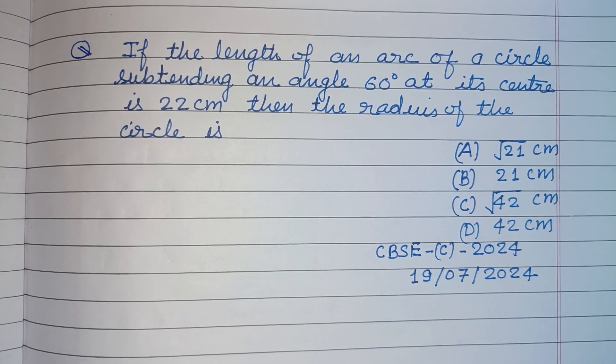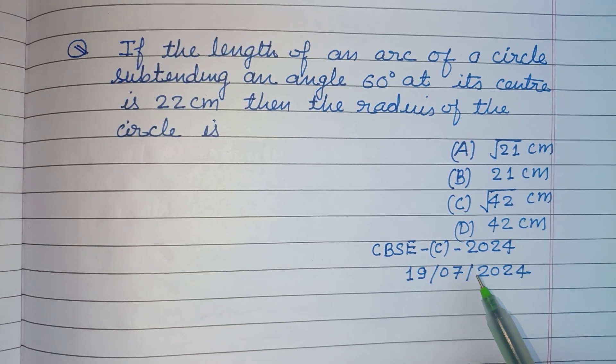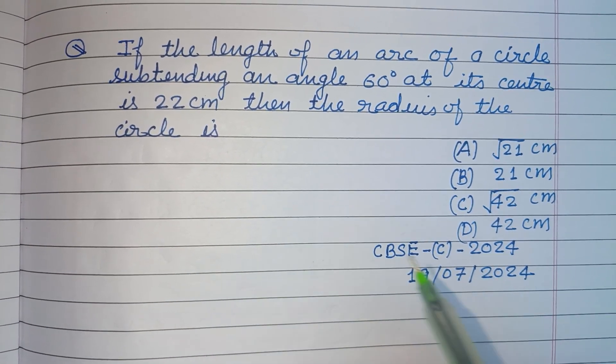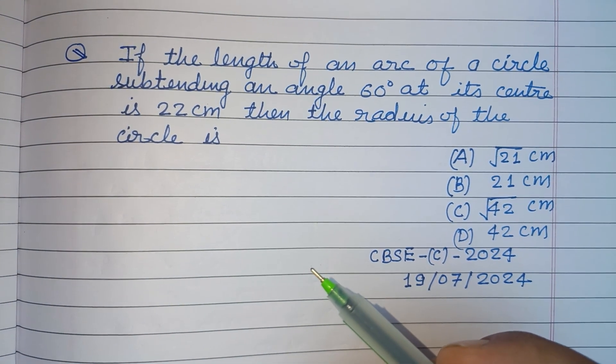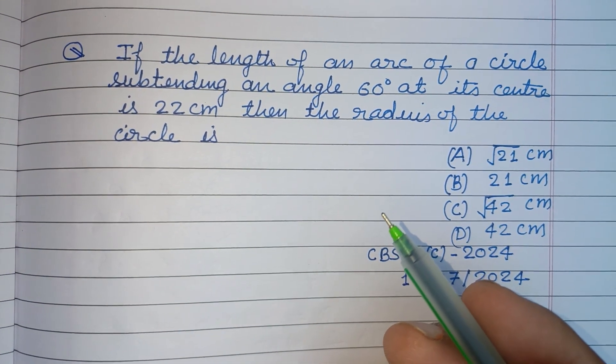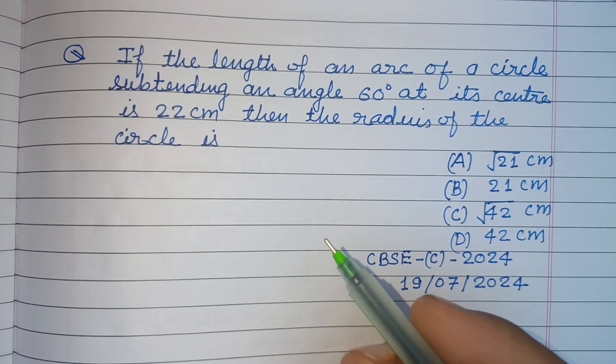Hello viewers, warm welcome to this YouTube channel. This is a question from CBSE compartment exam 2024. If the length of an arc of a circle subtending an angle 60 degrees at the center is 22 centimeters, then the radius of the circle is...